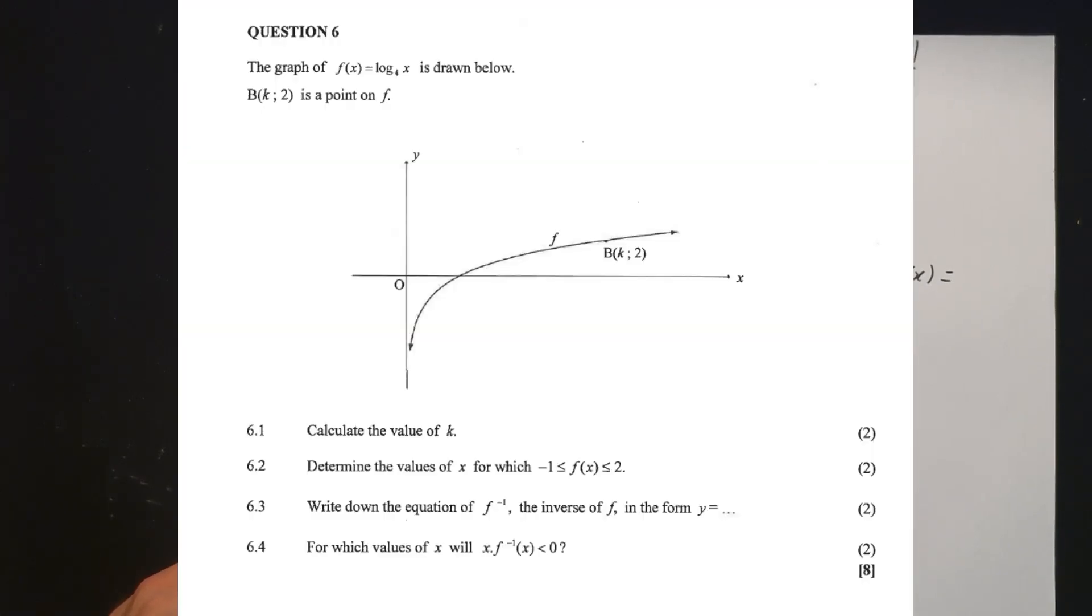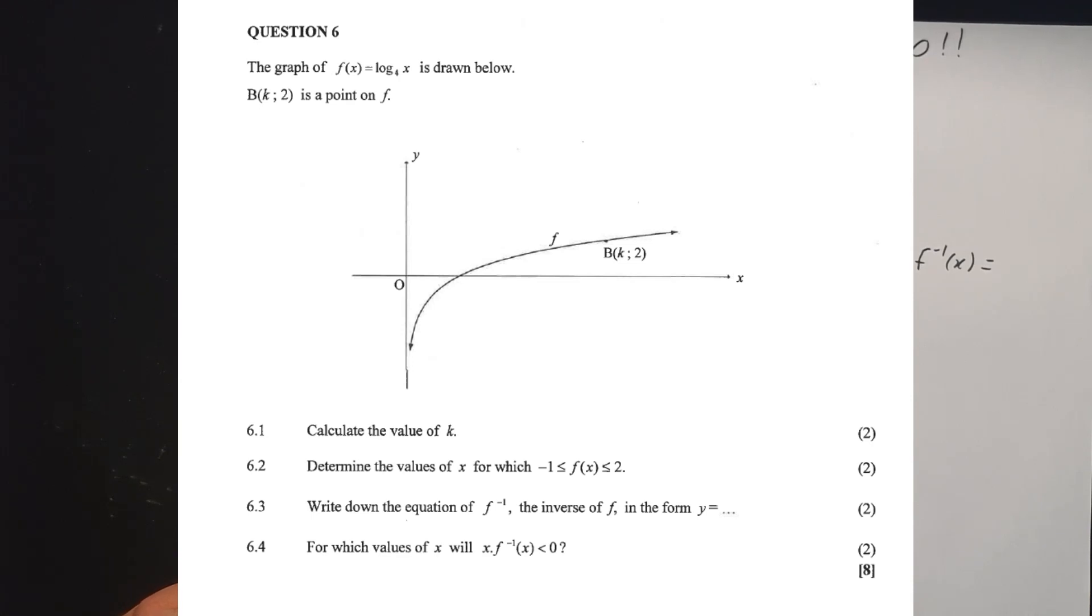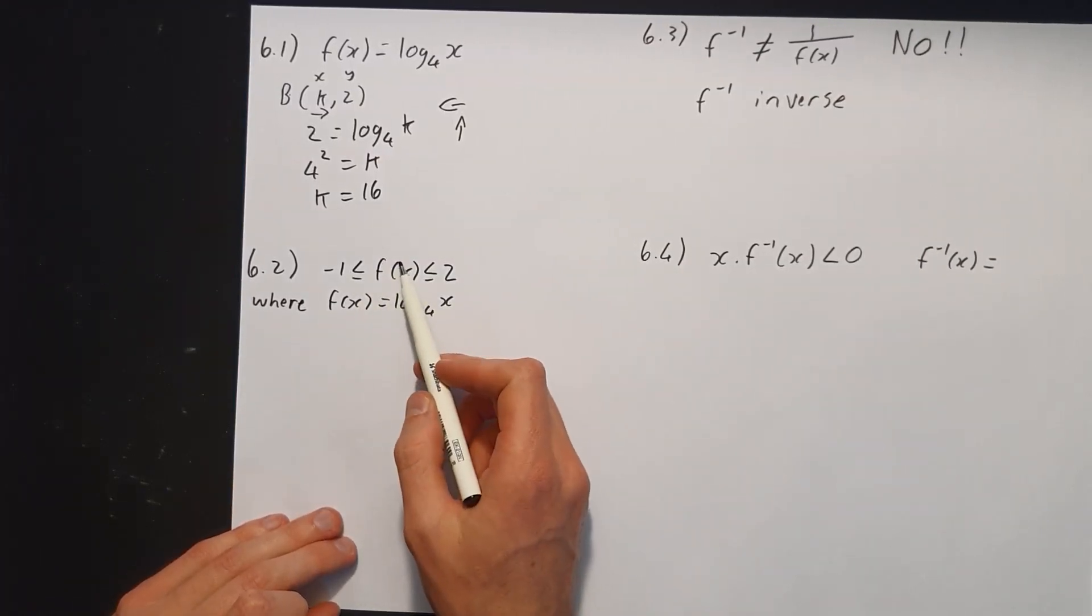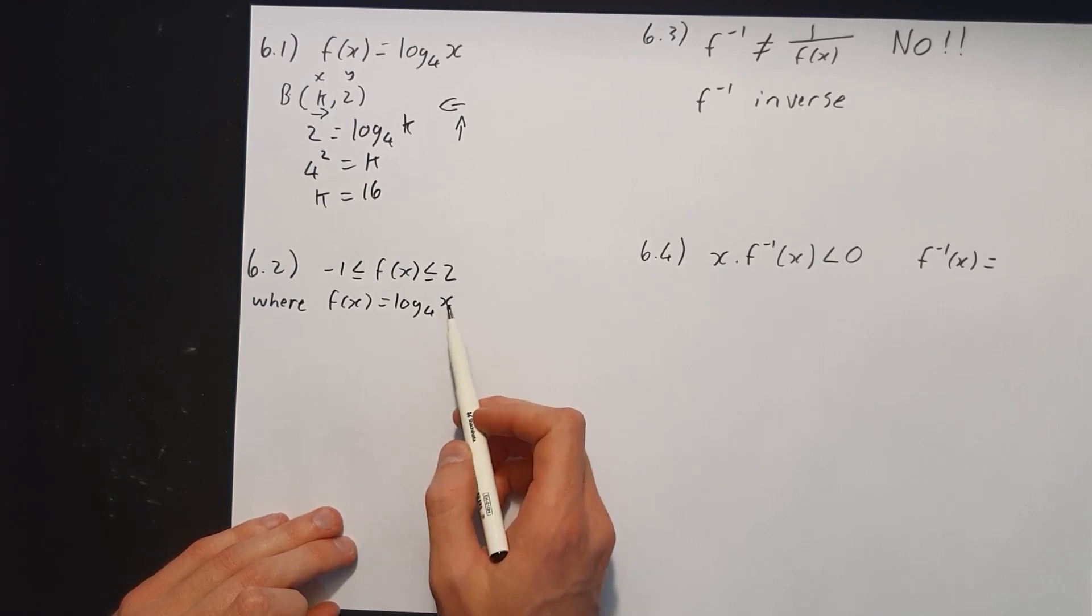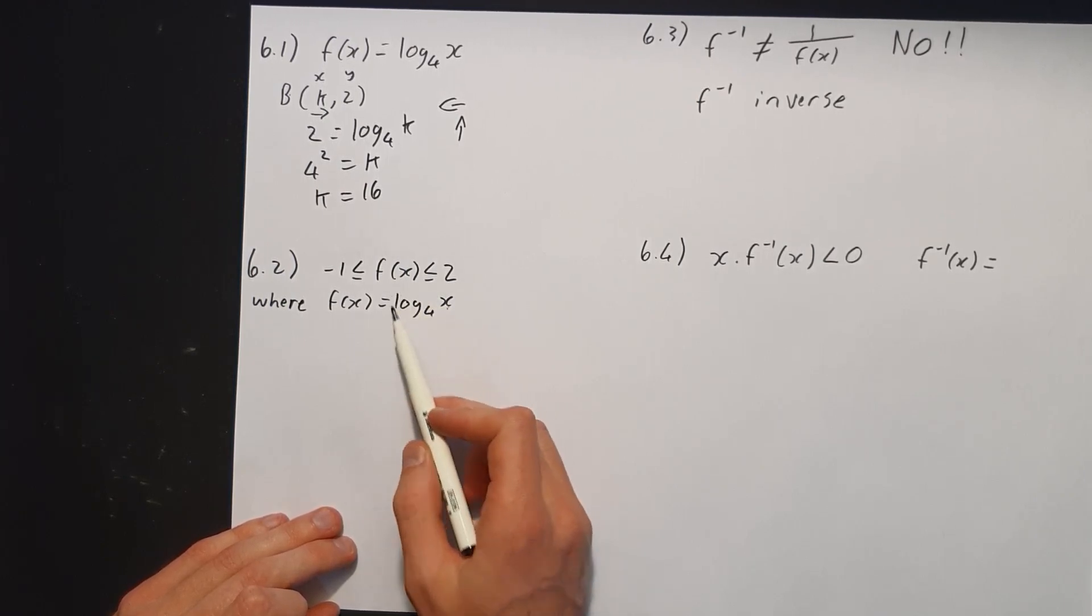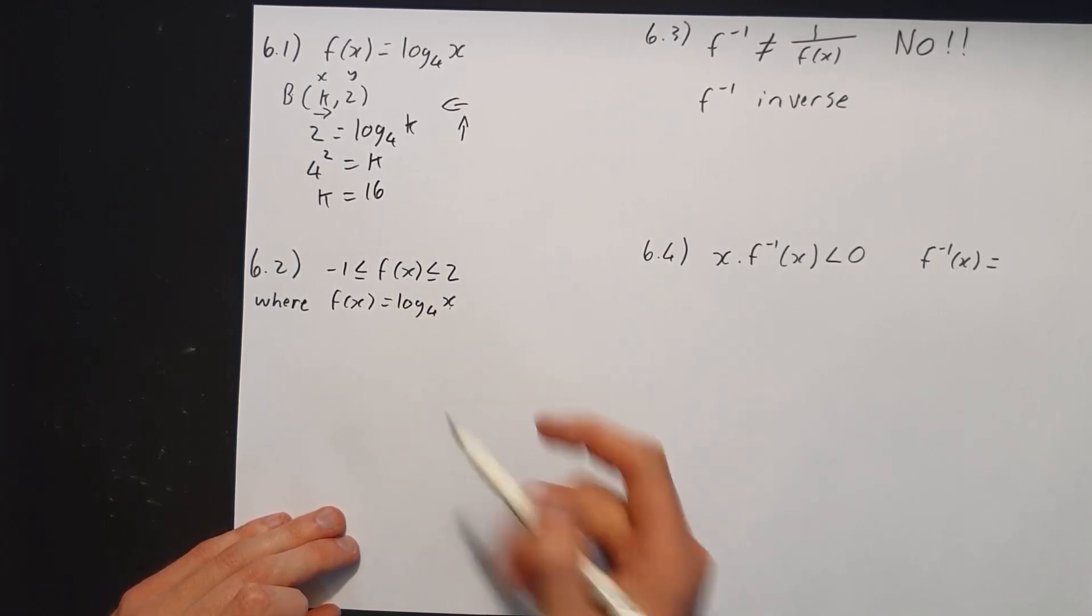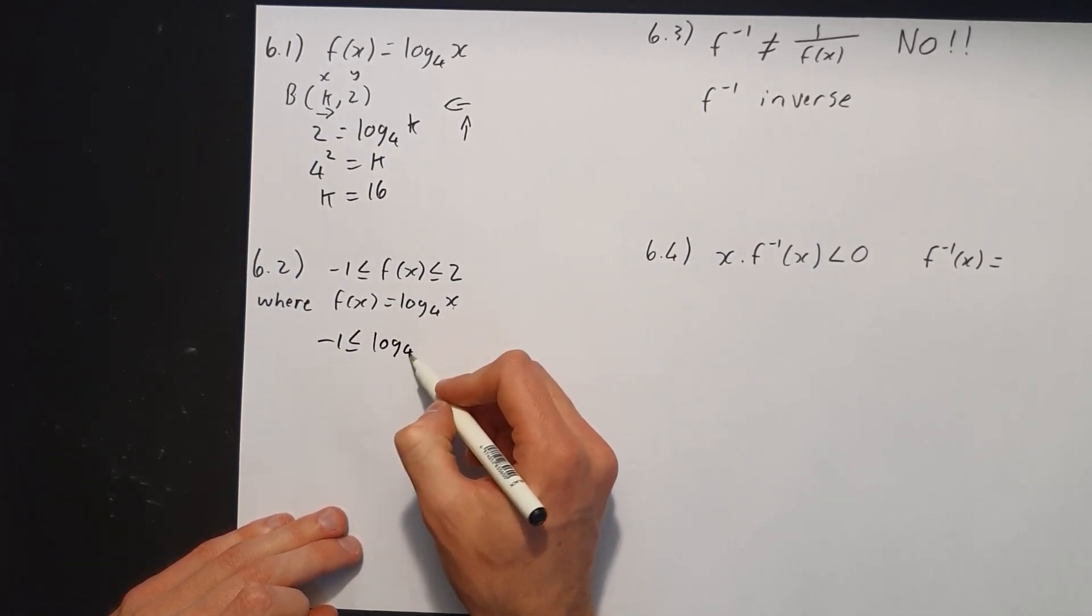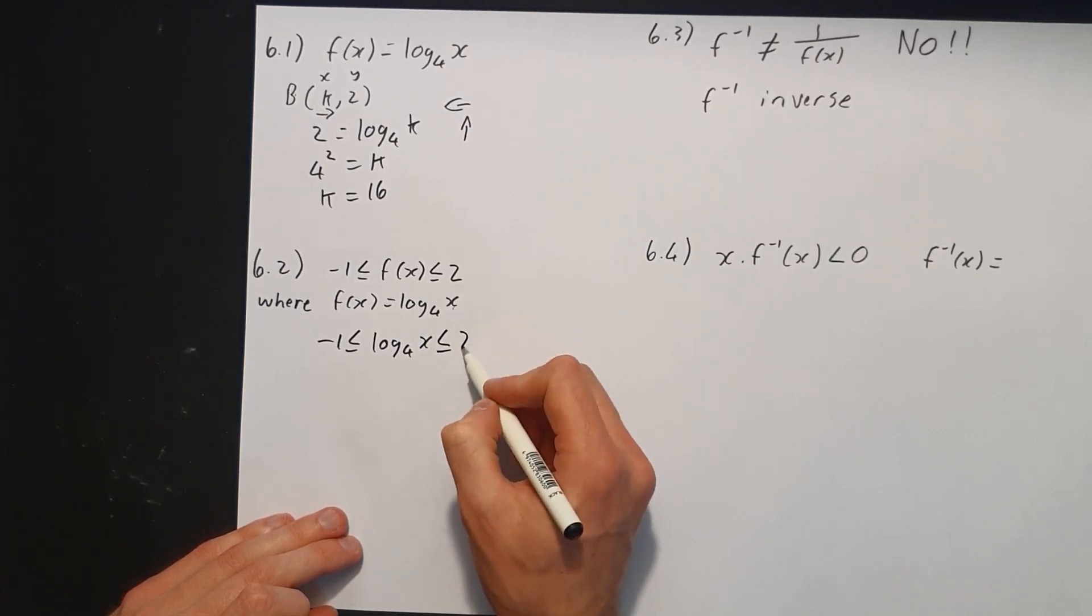Now 6.2 says determine the values of x for which -1 ≤ f(x) ≤ 2. I've written it out here. Remember f(x) is given as the function log₄(x). So I'm going to substitute log₄(x) into f(x)'s place. So you're going to have -1 ≤ log₄(x) ≤ 2.